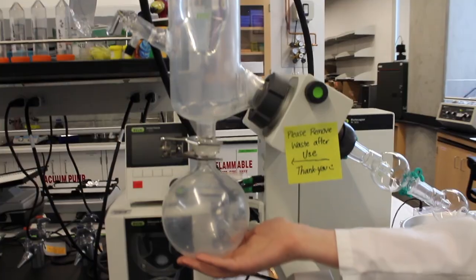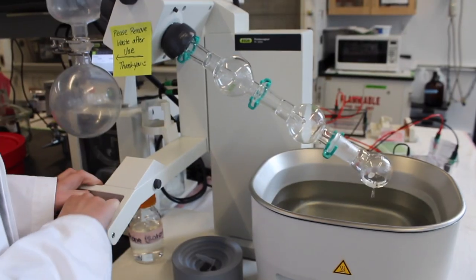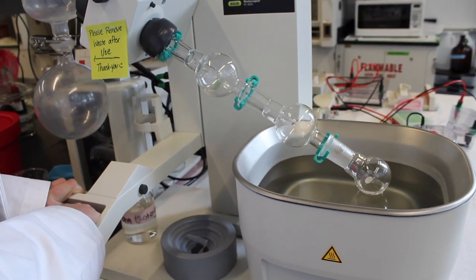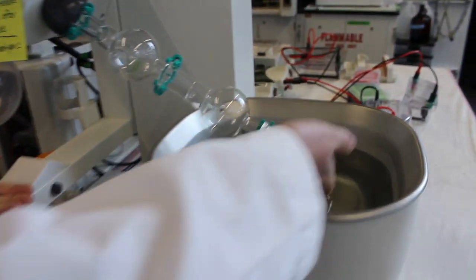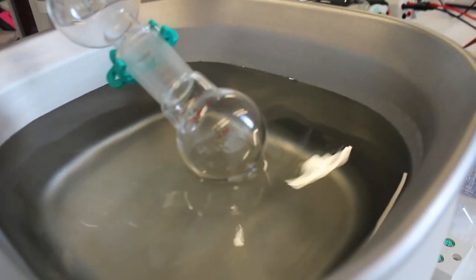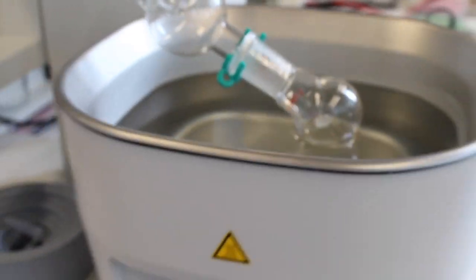Every part of the Rotovap is powered by a motor pump. The first thing you need to do is make sure the water level is high enough so that when you lower the round bottom flask into the water bath, it sits nicely. This is very important. You don't want the water too low or too high that water seeps into the round bottom flask with your solvent.